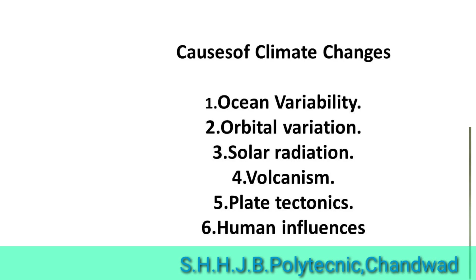Now let us see the causes of climate change. The first cause is ocean variability — alterations to ocean circulation play a key role in redistributing heat by carrying out a very slow and extremely deep movement of water. The second is orbital variations — slight variations in Earth's orbit lead to changes in the seasonal distribution of sunlight reaching the Earth's surface. The third is solar radiation — the sun is the predominant source of energy input to the Earth, and both long and short-term variations in solar intensity are known to affect global climate.